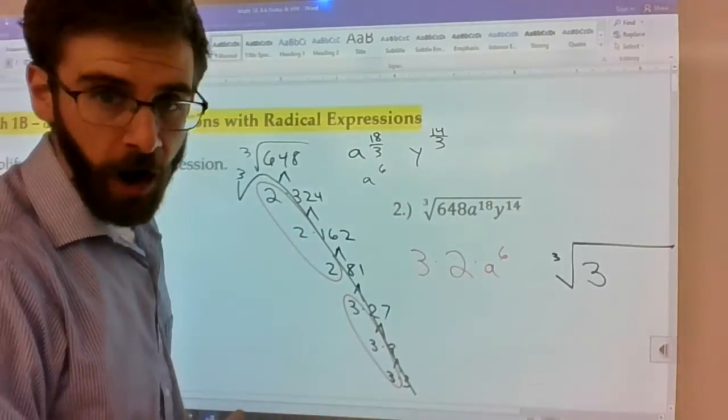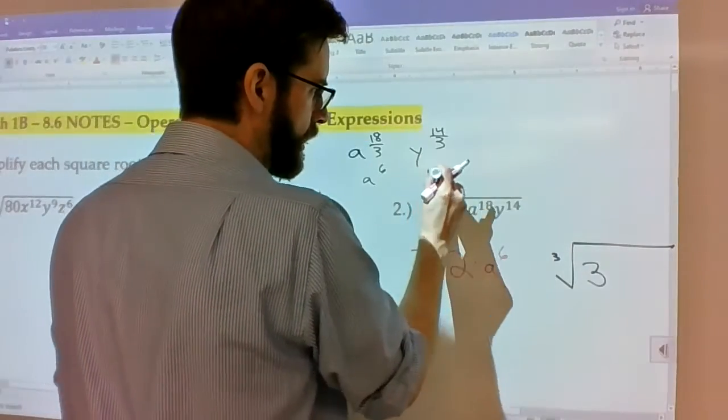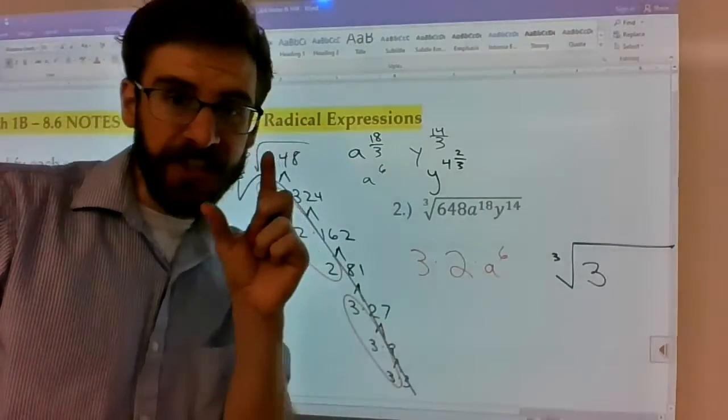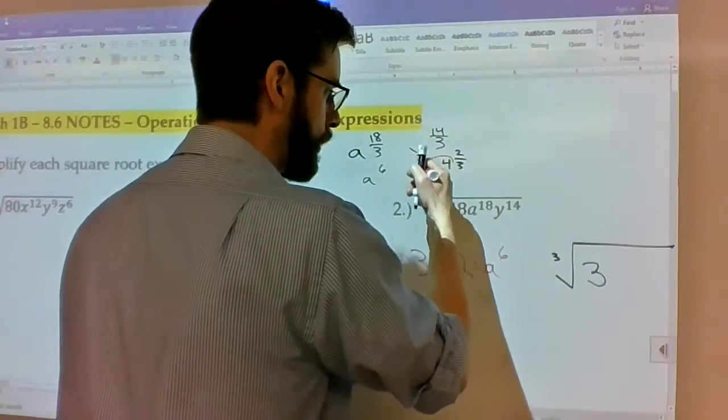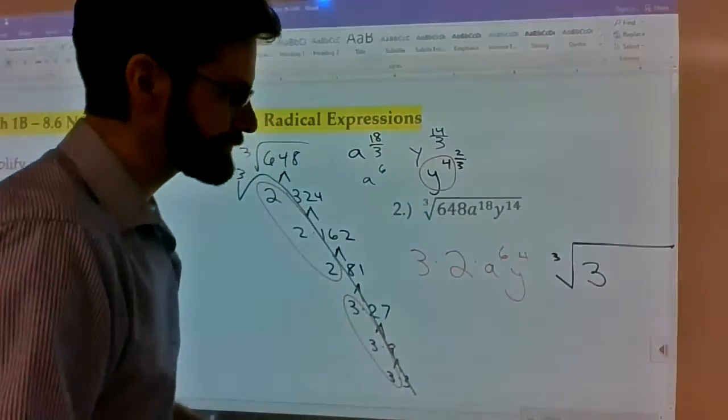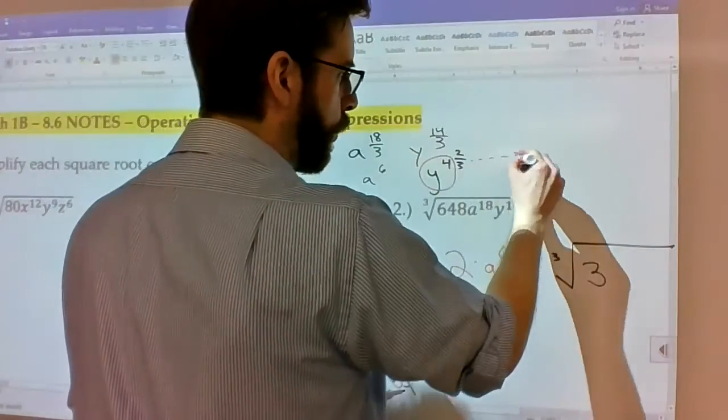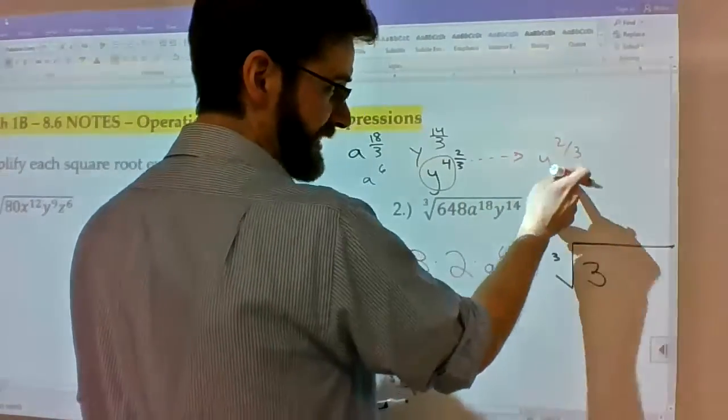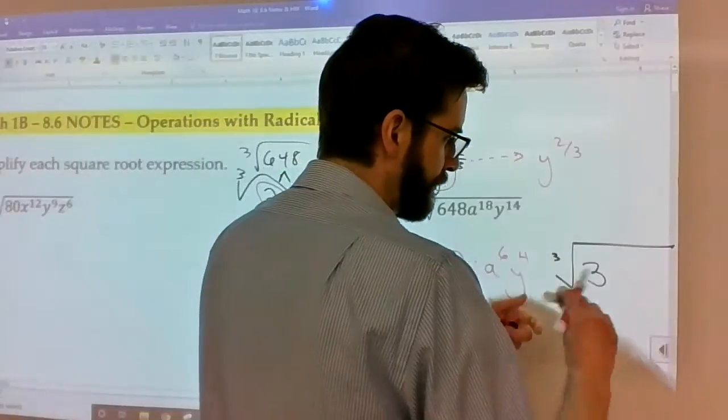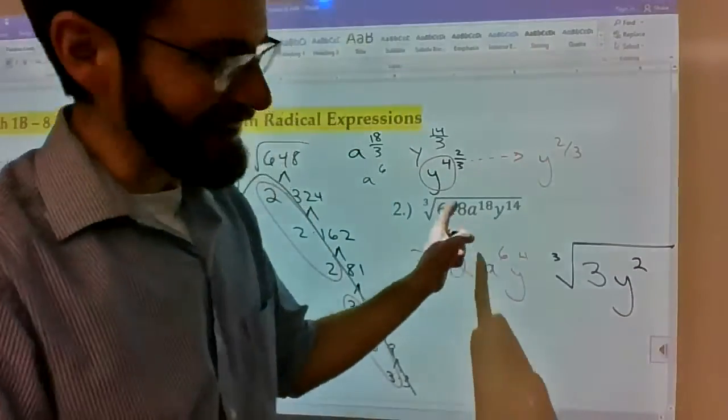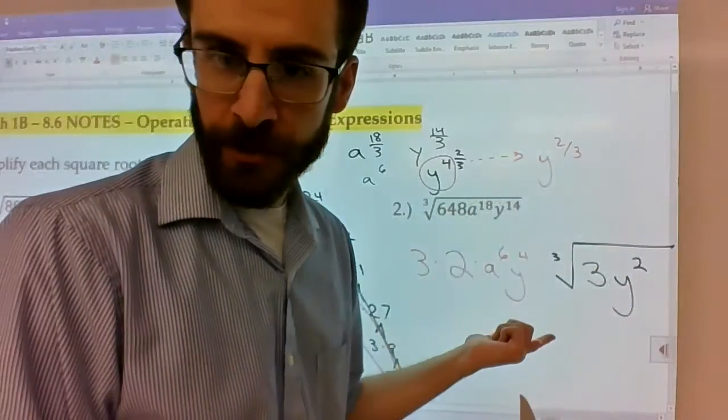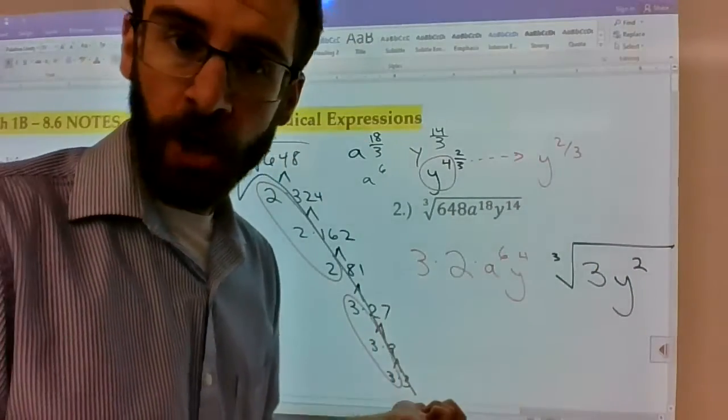However, with the y, y ends up being 4 and 2 thirds because 14 divided by 3 is 4 and 2 thirds. That means that y to the 4th power is going to go outside. And then if we have y to the 2 thirds left over from that, we got 2 thirds left over. That means you would have y squared inside of the root because 2 divided by 3 would give us the y to the 2 thirds. And we're basically done. Just take 2 times 3 and call it 6.